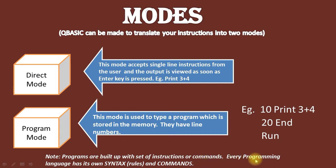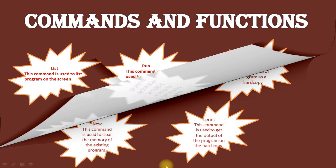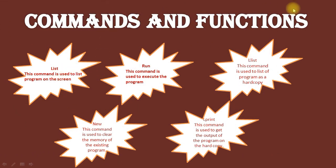Programs are built with a set of instructions or commands, and every programming language has its own syntax rules. The LIST command is used to list the program on the screen. The RUN command is used to execute the program. The LPRINT command is used to print the output of a program as a hard copy.